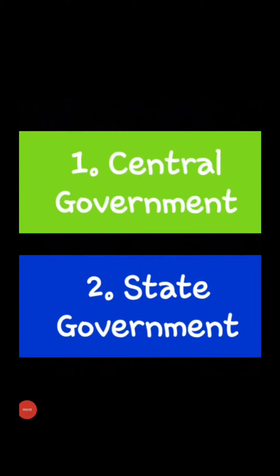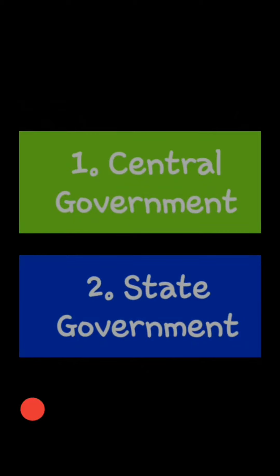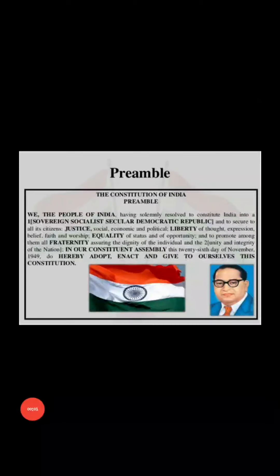For the smooth functioning of the country, the government of India has been divided into two levels. Number one: the Central Government, also known as the Union Government. Number two: the State Government. The powers of both of these levels have been mentioned clearly in the Constitution of India.